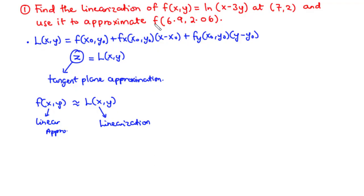Now we have a question. Question one: we are going to find the linearization, or equivalently the linear approximation, of the function at the point (7, 2) and use that to approximate f(6.9, 2.06). Let's try to solve this question together.